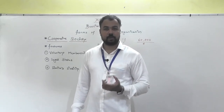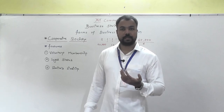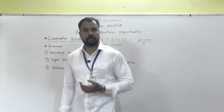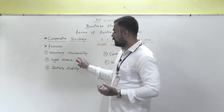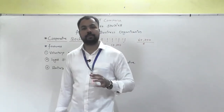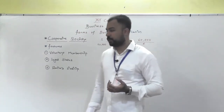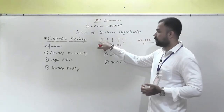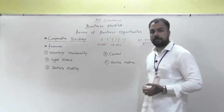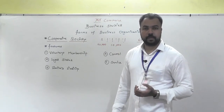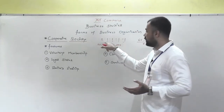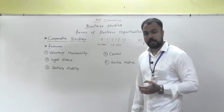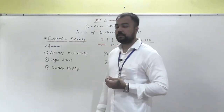Legal status means the society must be registered under the Cooperative Societies Act, which gives you voting rights, and you can file suits against members or third parties, and they can file against your society. Limited liability means the liability is in ratio of capital contributed — for example, if one member contributed one lakh and others contributed fifty thousand each, their liabilities are in that ratio.